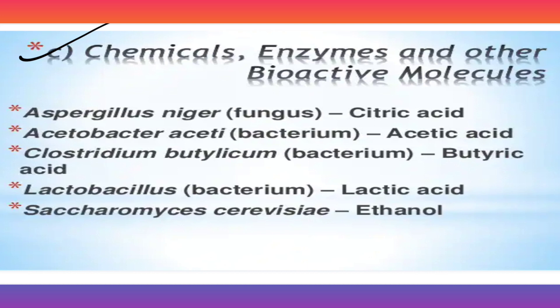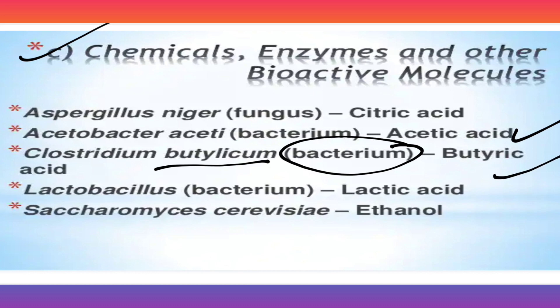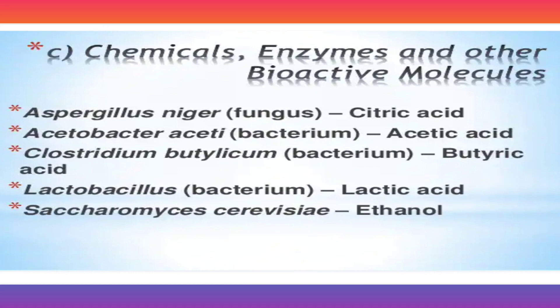For organic acids from microbes: Aspergillus niger produces citric acid; Acetobacter aceti, which is a bacteria, produces acetic acid; Clostridium butylicum, which is a bacteria, produces butyric acid; Lactobacillus, which is a bacteria, produces lactic acid; and Saccharomyces cerevisiae produces ethanol.